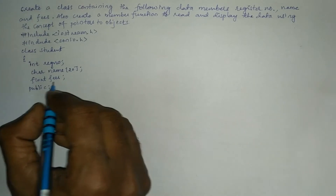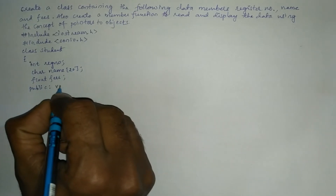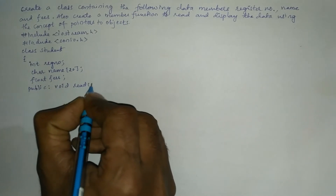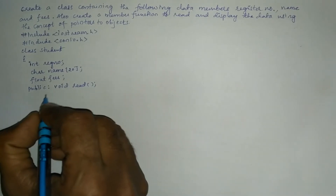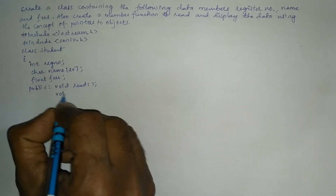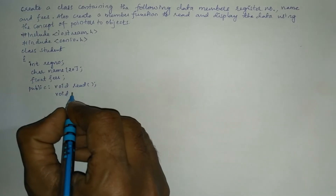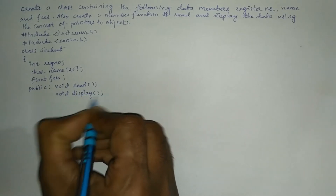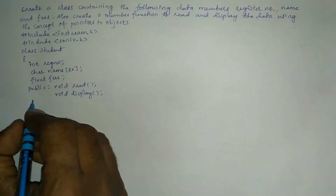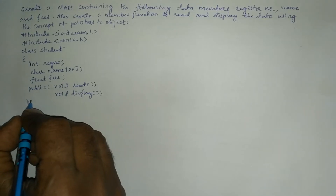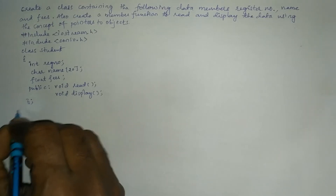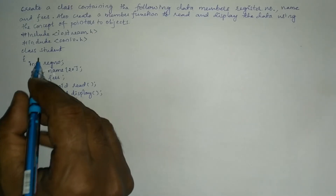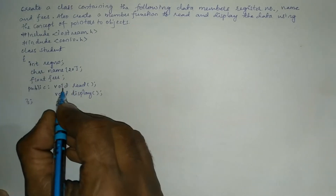Next, in the public section we are going to declare two user-defined functions. We write void read() to accept input and void display() to display the output. Then a curly closing brace followed by a semicolon, which indicates the termination point of the class definition.